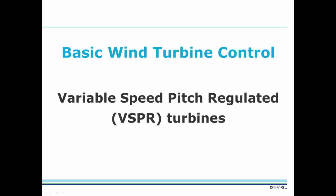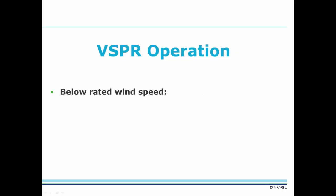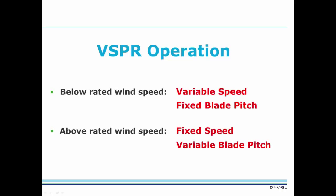Most commercial wind turbines are variable speed pitch regulated machines. This means that below their rated wind speed, they operate at variable speed with fixed blade pitch. For wind speeds above rated, they run at fixed speed with variable blade pitch.